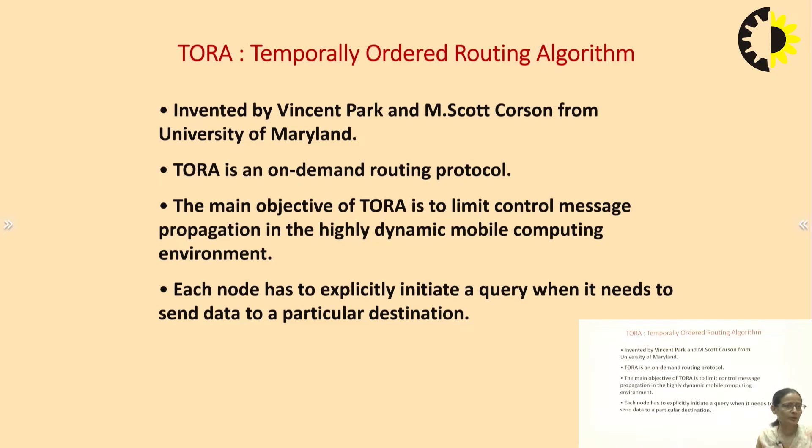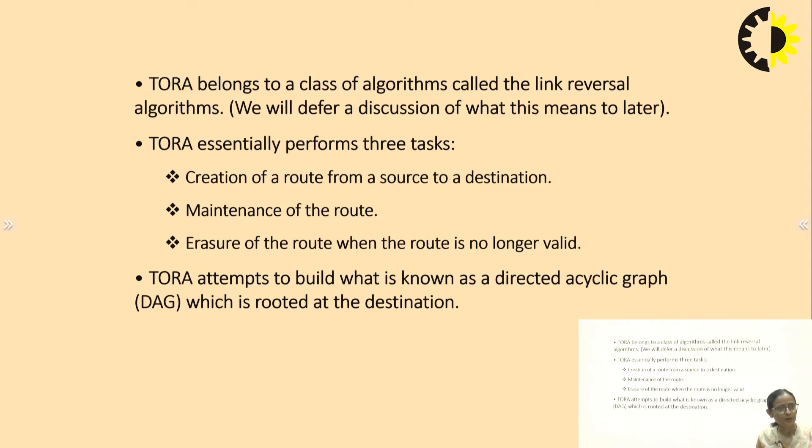Each node has to explicitly initiate a query when it needs to send the data to a particular destination. TORA basically belongs to a class of algorithm called the Link Reversal Algorithm. TORA essentially performs three tasks: creation of a route from source to destination, maintenance of the route, and erasure of the route when the route is no longer valid.